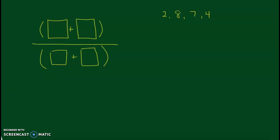So, I'm going to just kind of randomly put in some numbers here. I'm just going to go in order for one example. I'm going to go two plus eight, and then seven plus four on the bottom. So, if we did two plus eight, that would be ten. And seven plus four will be eleven.